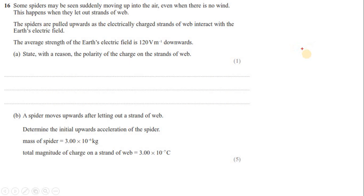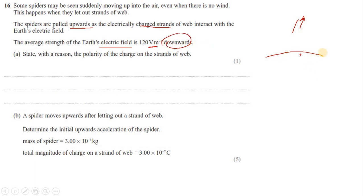So what is happening? If this is the surface of the Earth and this is a strand, they said that the spiders are pulled upward because of the electrically charged strand, so the strand is going up. The reason is the Earth has an electric field of 120 volts per meter downward, and this downward direction shows that the Earth has a negative electric field - in fact our Earth is a negative charge carrier. So that means the negative Earth repels the charged strand, and due to repulsion we can say that this strand should have a negative charge.